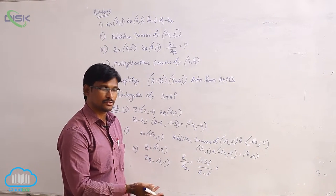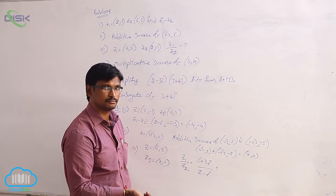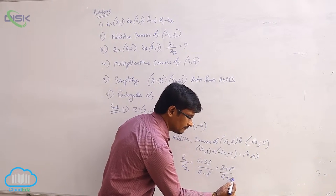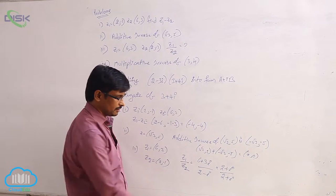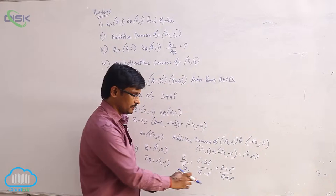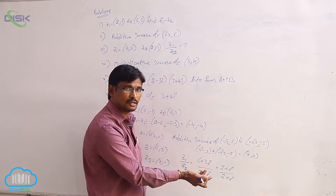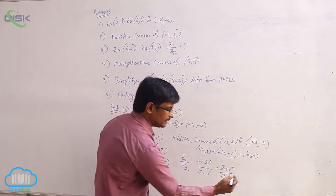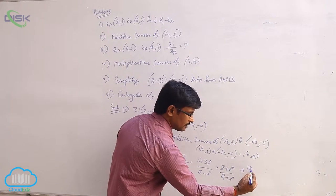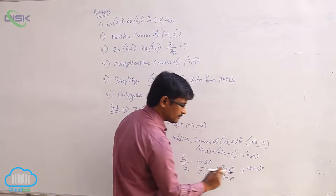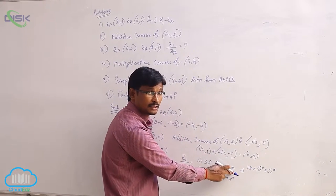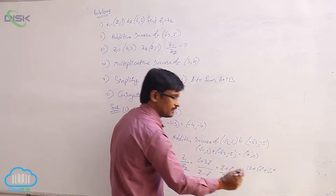The denominator is 2 − i, so we multiply and divide by its conjugate, 2 + i. For the imaginary part we take the opposite sign: opposite of −i is +i. In the numerator, multiply out: 6×2 = 12, 6×i = 6i, 3i×2 = 6i, and 3i×i = 3i² = −3.